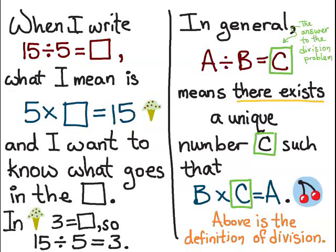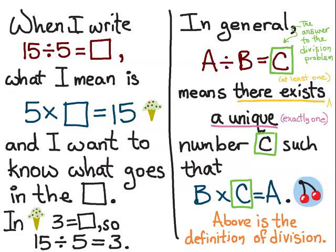The quantifiers, there are two different types: there's "there exists" which means that there is at least one number C, and the second quantifier is that C is unique, so there's exactly one C. Those two quantifiers are going to be the reason why we can't divide by zero.